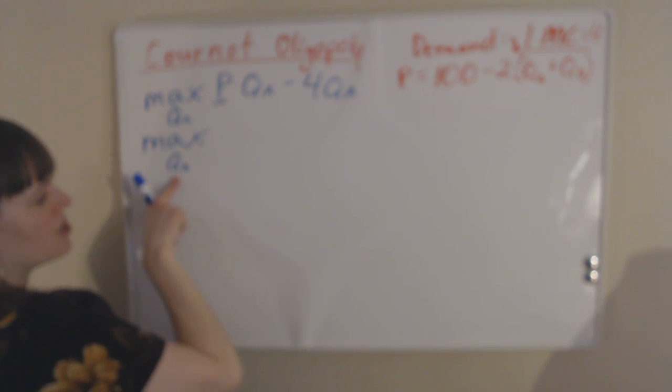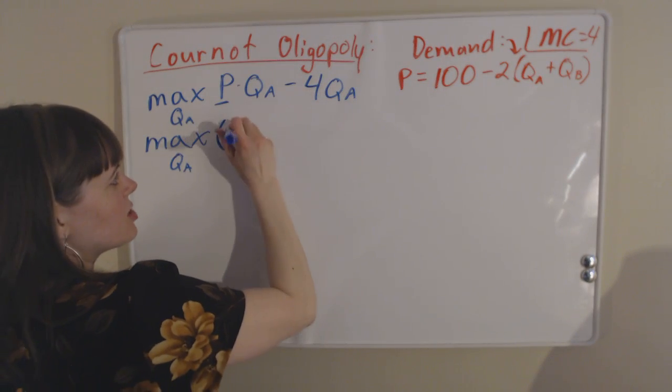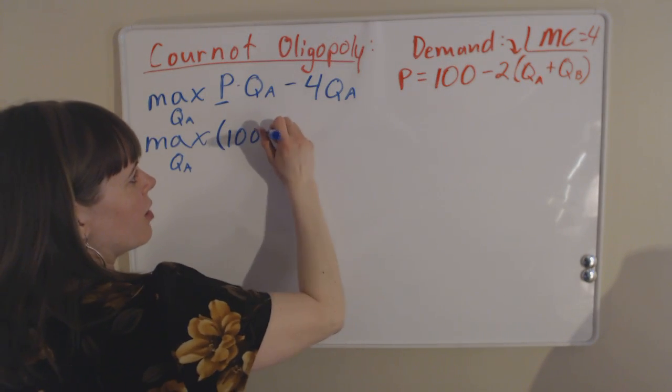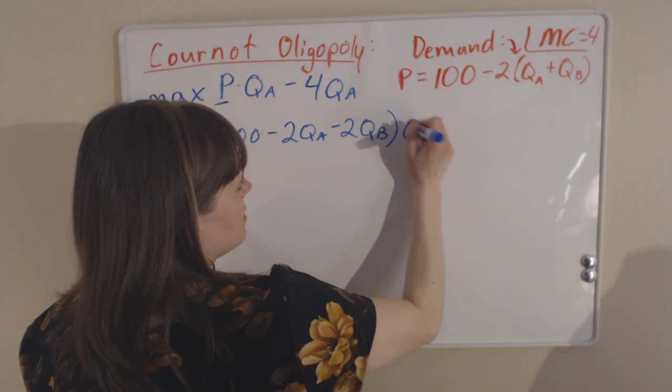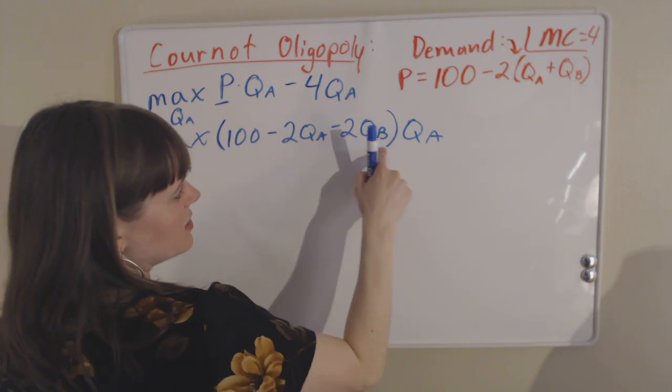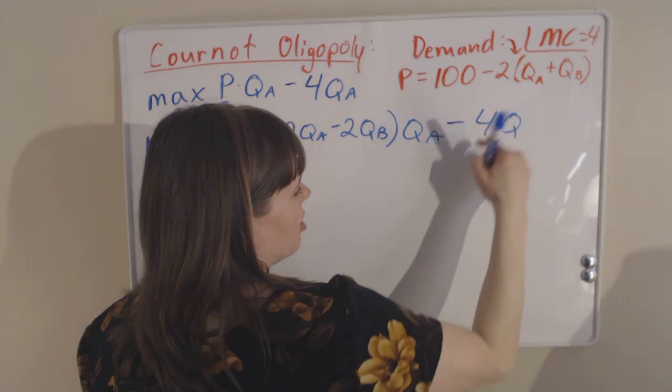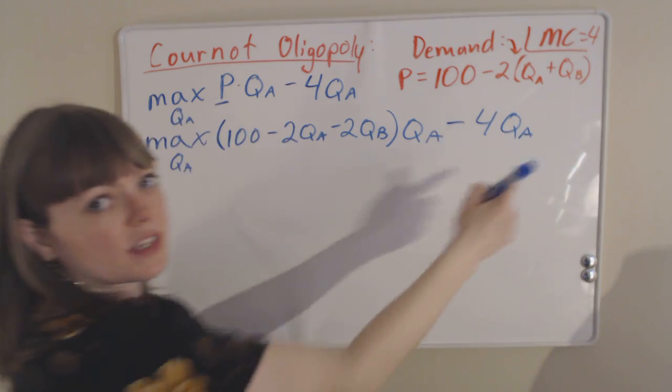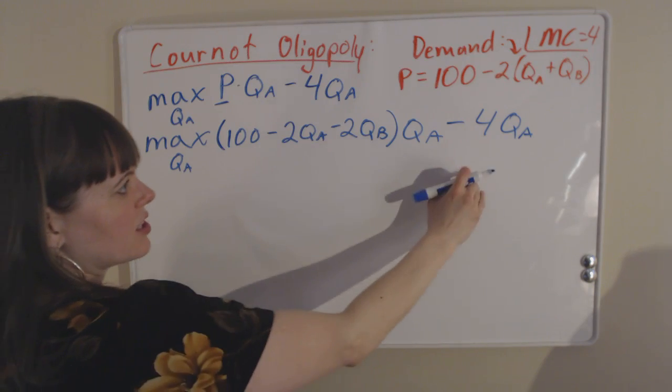Let's go ahead and do that. We maximize by choosing the quantity of firm A. We choose price, which is equal to the demand curve, 100 minus 2QA minus 2QB, times QA—so price times quantity minus total costs, which are the marginal cost times the quantity that we produce. We have our equation here.